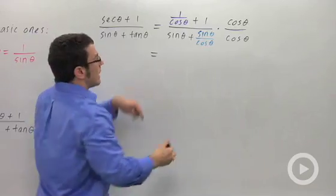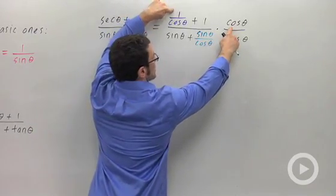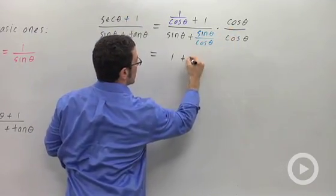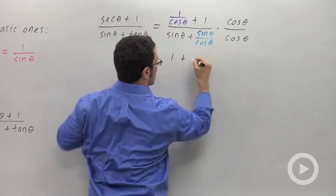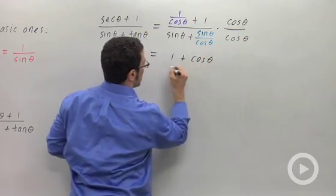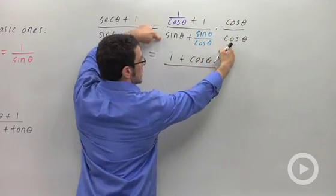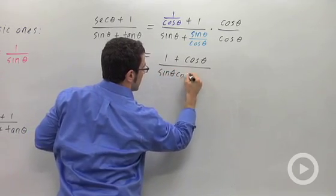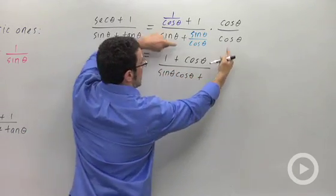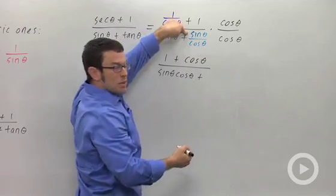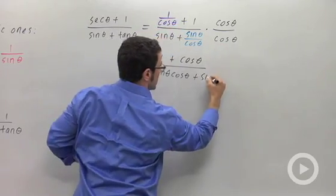So in the numerator, I get cosine times 1 over cosine is 1. Cosine times 1 is cosine. Cosine times sine is sine cosine. And sine over cosine times cosine, the cosines cancel and you get sine.